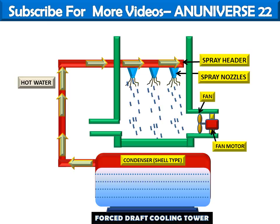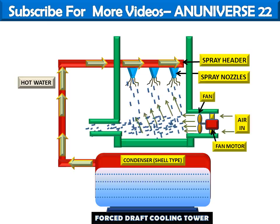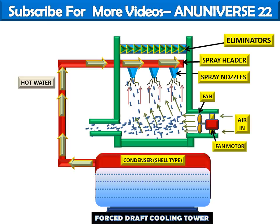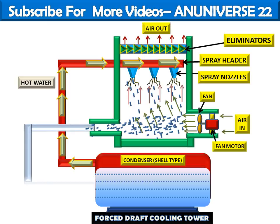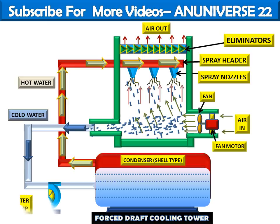These are the droplets of water. Here we can see where air enters and this is the path that the air moves. This is where water is collected. This shows the path of air moving upward, and this is the eliminator. From the eliminator, the exhaust hot air goes out. This is another pipe for supplying the cold water with the help of a water pump to the condenser.